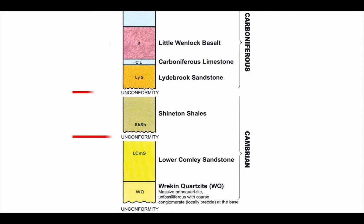As well as obvious unconformities between geological periods, we can also see unconformities within a geological period. The Lower Conley Sandstone and the Cheyenton Shales are both Cambrian in age, but there is still an unconformity between the two — there is a break in the record and a gap in time.